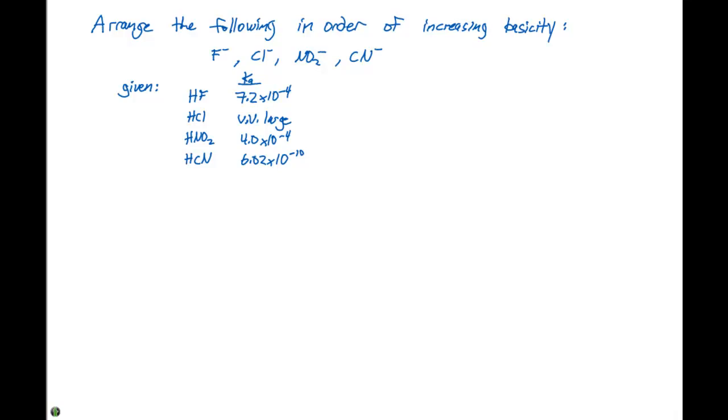The given information includes Ka values: HF is 7.2×10⁻⁴, HCl is very large, HNO₂ is 4.0×10⁻⁴, and HCN is 6.0×10⁻¹⁰.